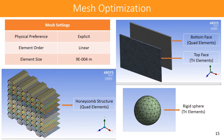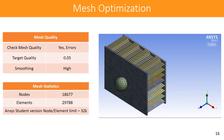For mesh optimization, the mesh settings use physical preferences for explicit dynamics, with a linear element order and element size of 9×10⁻⁴ m. The honeycomb structure and bottom face are meshed with quadrilateral elements, while the top face and rigid sphere use triangular elements. Mesh quality is checked with high smoothing. The mesh statistics show approximately 18,000 nodes and nearly 30,000 elements.